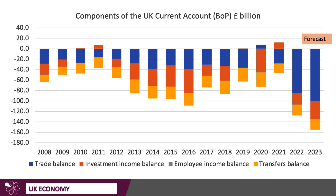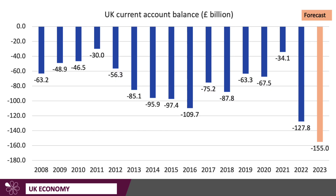It's forecast to be £100 billion in 2023. The current account is a net figure of trade, primary income and transfers, and it came in at £128 billion in 2022 — an increase of more than fourfold from 2021. As you can see, the UK runs a big current account deficit each year.